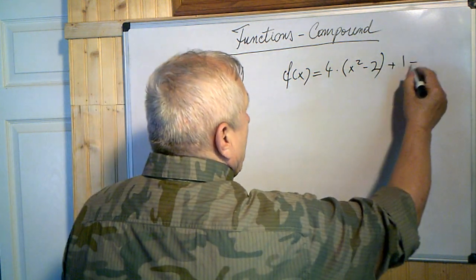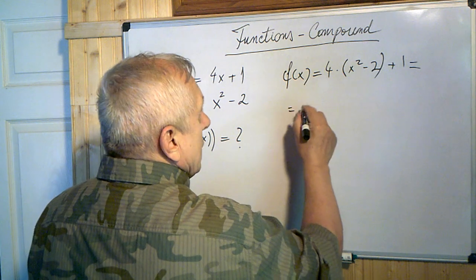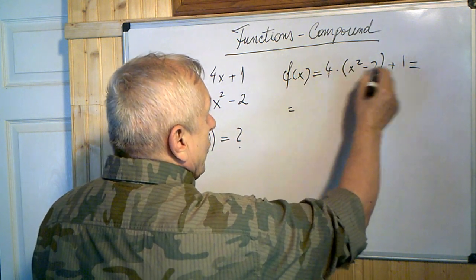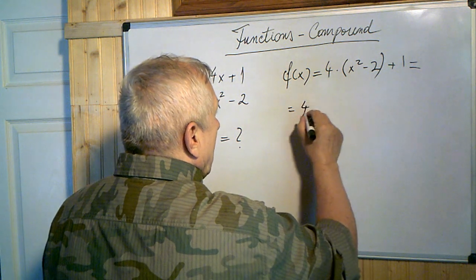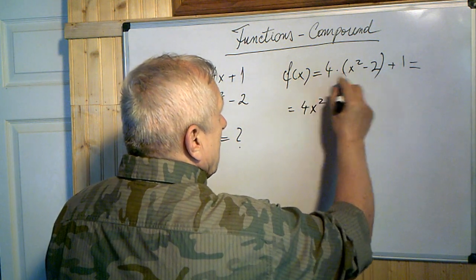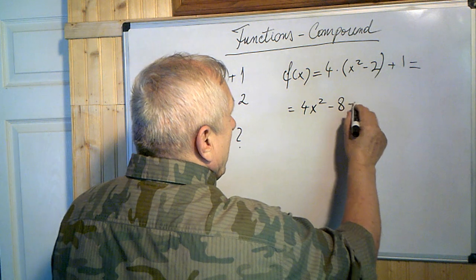Okay, so let's see how much is this. Not very difficult. We multiply 4 with the terms in this parenthesis. That would be 4x squared, and here minus 8 plus 1.